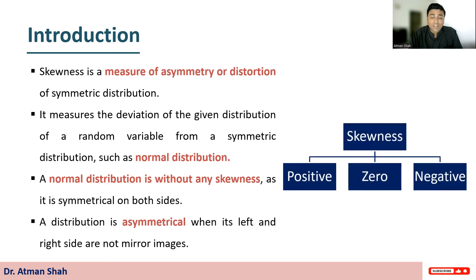There are three types of skewness: positive skewness, negative skewness, and zero skewness. Let's understand the types.